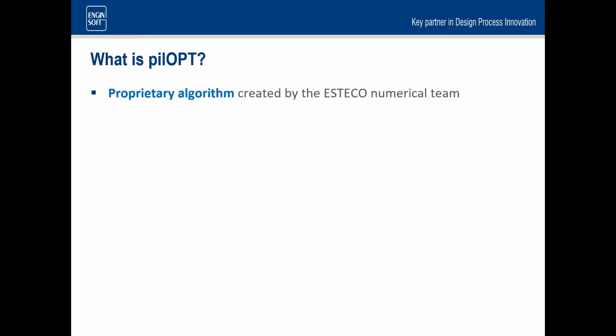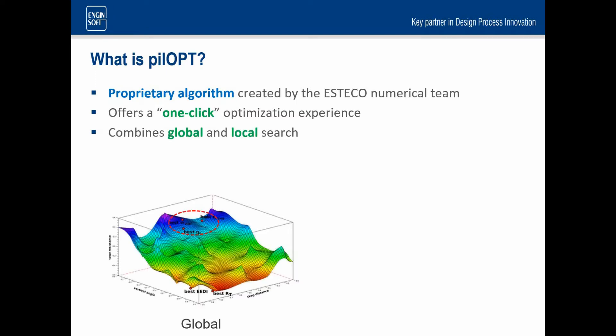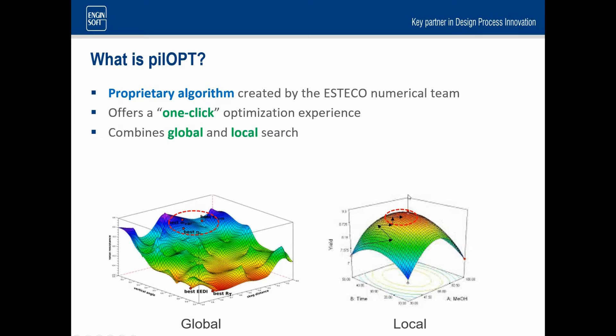So what is PilOPT? PilOPT itself is a proprietary algorithm created by the Esteco numerical team. It's a one click optimization experience. The whole purpose is to hopefully not confuse the user. Technically it combines two things, a global and local search amongst other things. So if you're looking at a design space as shown below, your response might be mountainous, and you might be wanting to find a region inside that mountain range. You're looking for a single peak or a region that you're interested in, but you haven't fine-tuned it right to the top of that peak or that location.